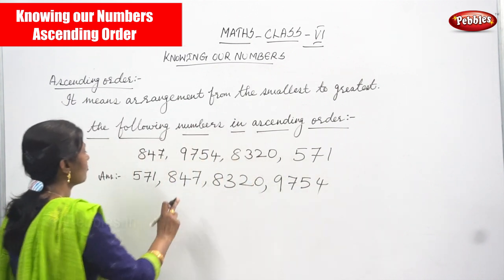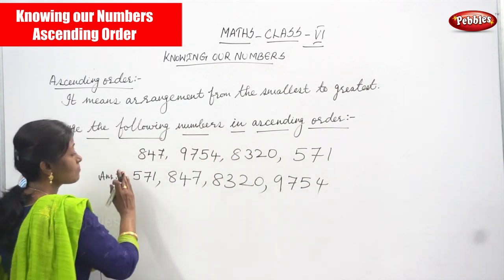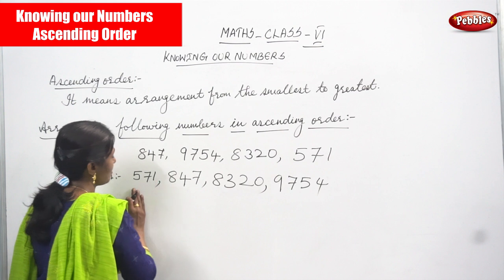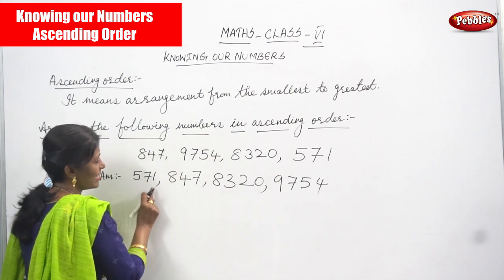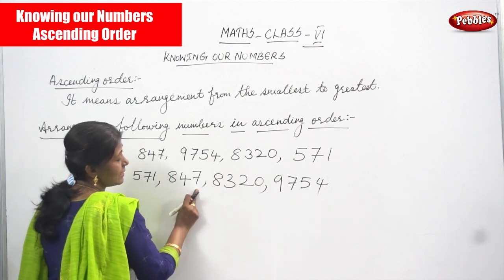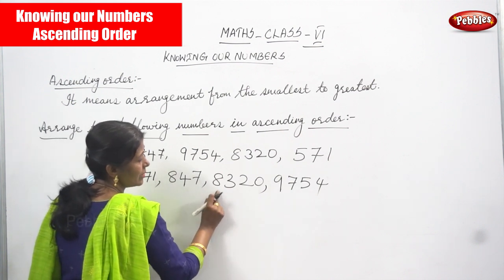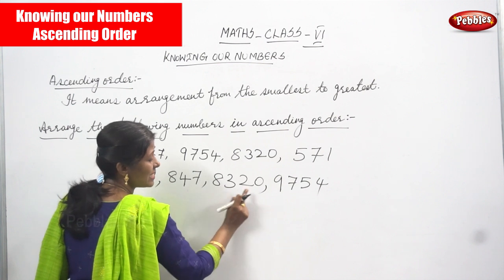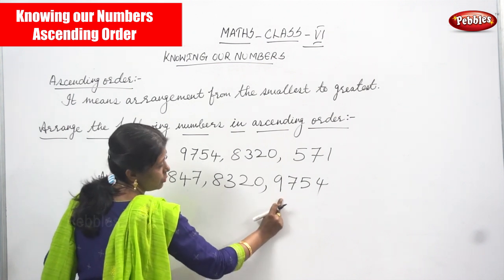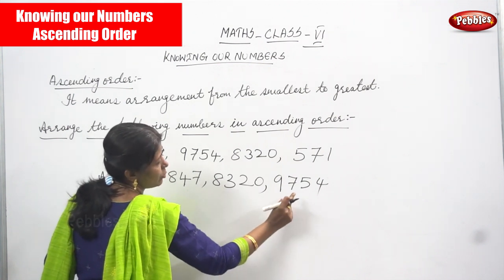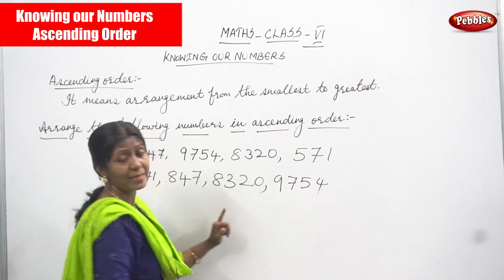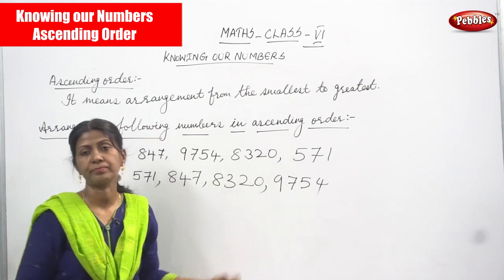So now arranging from smallest to greatest: the first number is 571, second is 847, third is 8320, and the last number is 9754. This is the right answer for the question.